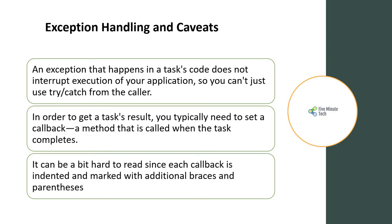There are certain caveats around exception handling. An exception that happens in the task code does not interrupt execution of your calling code, so you can't just use try-catch from the caller as in a normal scenario. To get the task result you typically need to set a callback — a method that is called when the task completes, as shown in the demo. This can be a bit hard to read since the callback is indented and uses lambda expressions with additional braces and parentheses.